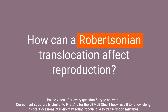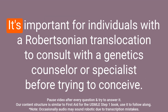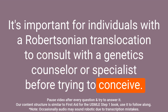Question: How can a Robertsonian translocation affect reproduction? Answer: A Robertsonian translocation can affect reproduction by causing an increased risk of miscarriage, stillbirth, and chromosomal imbalances in offspring. It's important for individuals with a Robertsonian translocation to consult with a genetics counselor or specialist before trying to conceive.